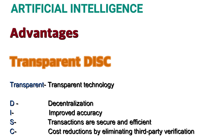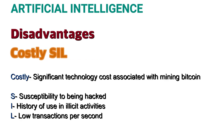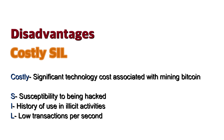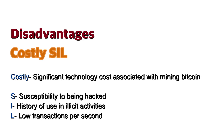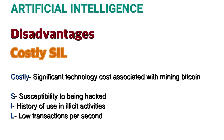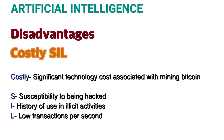Next, the mnemonic for Advantages of Blockchain is 'TRANSPARENT DISC'. Transparent stands for Transparent Technology, D for Decentralization, I for Improved Accuracy, S for Secure and Efficient Transactions, and C for Cost Reduction by eliminating third-party verification. The mnemonic for Disadvantages of Blockchain is 'COSTLY'. C stands for Significant technology Cost associated with mining Bitcoin, O for ability of being hacked, S for history of use in illicit activities, and L for Lower transactions per second.